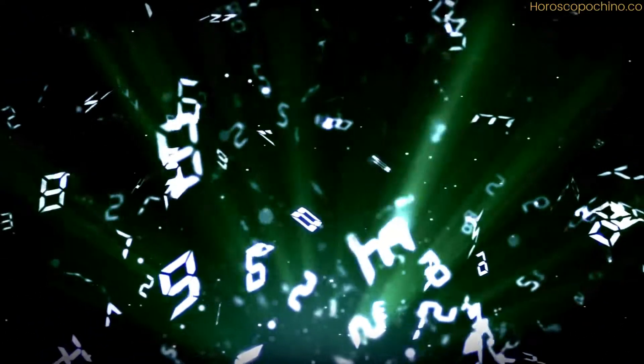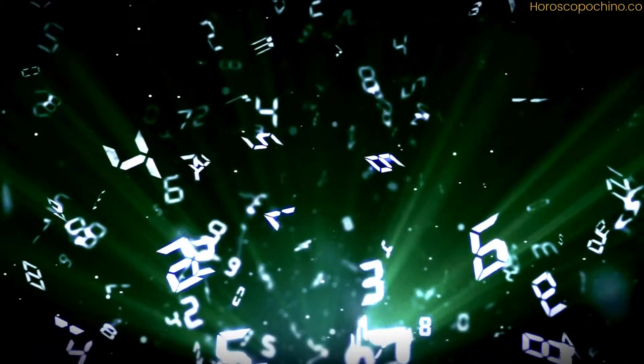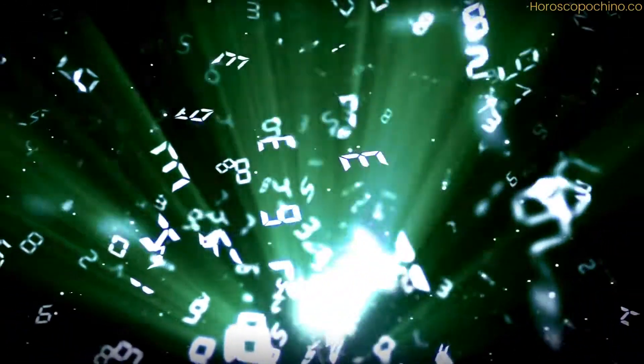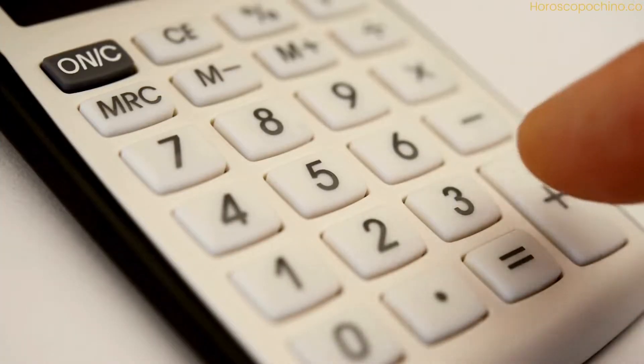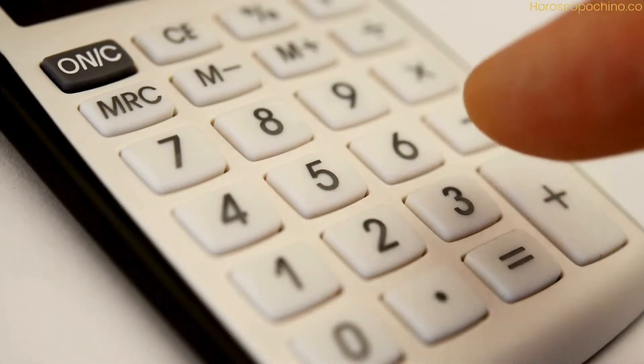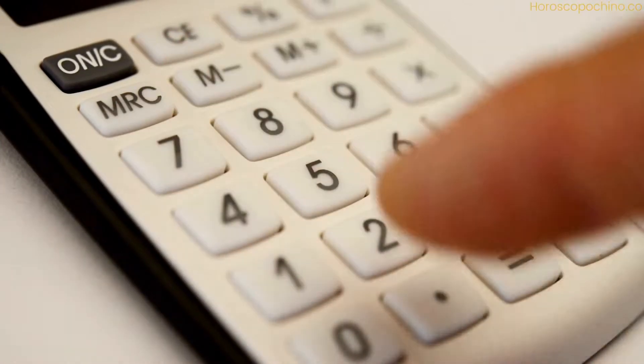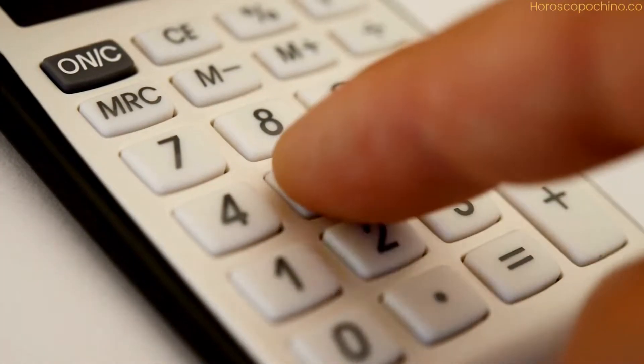To calculate your connection number in numerology, you must first know your life number, which is obtained by adding the digits of your date of birth and reducing them to a single digit, except in the cases of the master numbers 11, 22 and 33, which are considered exceptions.